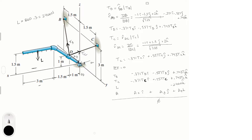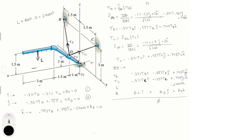Remember that the sum of all forces equals zero, so we derive three equations. In i: minus 0.371 TB minus 0.371 TC plus Ax equals zero. In j: minus 0.557 TB plus 0.557 TC plus Ay equals zero. In k: 0.743 TB plus 0.743 TC minus 2400 plus Ac equals zero. We'll call these equation one, equation two, and equation three.